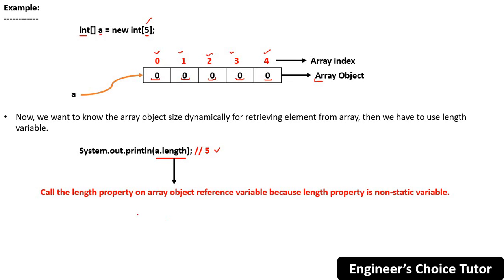Remember: we are calling this property on the reference variable 'a', so call the length property on the array object reference variable. This is because the length property is a non-static variable, so we should call it using the reference variable. We will understand this more when we start OOP concepts, but for now just remember: call this property on the array object reference variable — a.length — and you will get five as output.